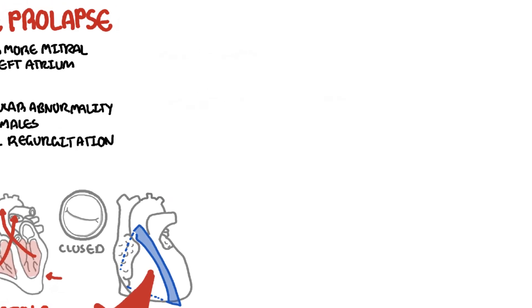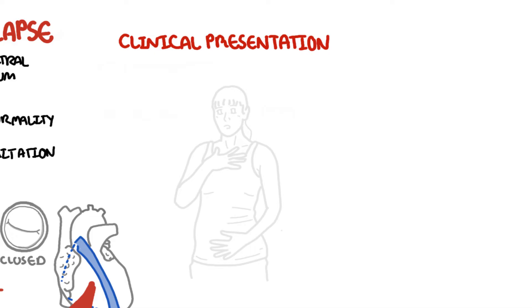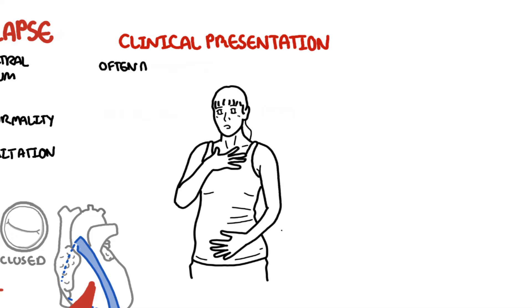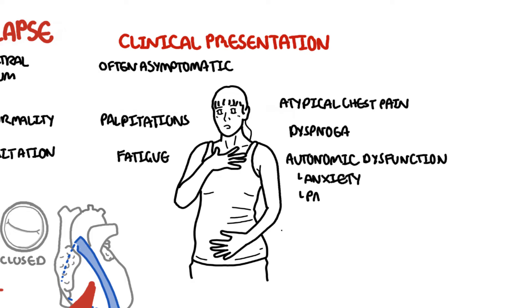The clinical presentation of mitral valve prolapse is often asymptomatic. However, one can develop palpitations and atypical chest pain, fatigue, dyspnea, and interestingly autonomic dysfunctions such as anxiety, panic attacks, and syncope.